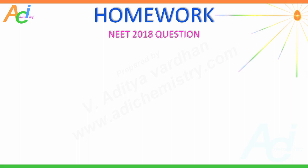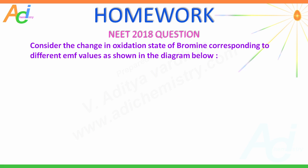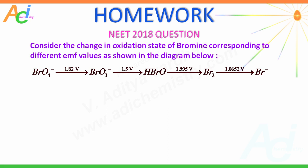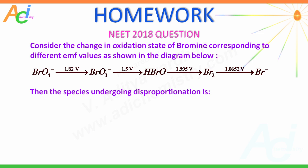Now it is time for a homework question from the NEET 2018 examination. Consider the change in oxidation states of bromine corresponding to different EMF values as shown in the Latimer diagram below — just like the one you have seen for chlorine. The question is: which species undergoes a disproportionation reaction? There are 4 options given.